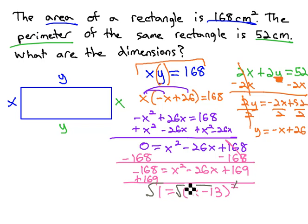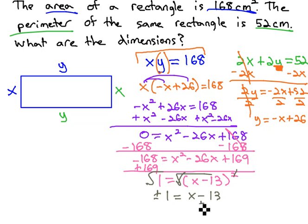Get rid of the square by taking the square root, plus or minus 1 is equal to x minus 13. You scroll a bit, as I'm almost out of space. Add 13 to both sides, and x is equal to 13 plus or minus 1.